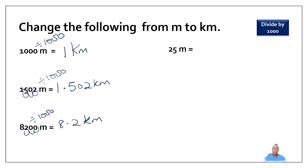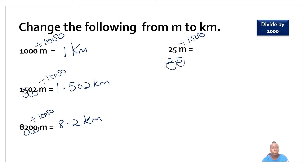Our next question: twenty-five meters. To change this I need to divide by one thousand. I shift my decimal point to the left three times. I don't have a decimal number, so I put a zero and go three times. That gives me point zero two five, and we can put a zero before that so it reads as zero point zero two five kilometers.